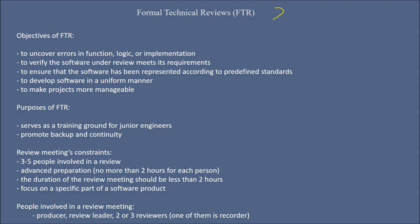The objective of a Formal Technical Review (FTR) is to uncover errors in function and logical implementation, to verify that the software under review actually meets its requirements, to ensure the software is represented according to predefined standards, to develop software in a uniform manner, and to make projects more manageable. The purpose of FTR also includes serving as a training ground for junior engineers and promoting backup and continuity. For the review meeting, three to five people should be involved, advance preparation should not take more than two hours, the duration should not exceed two hours, and focus is on a specific part of the software.